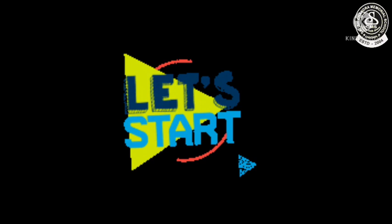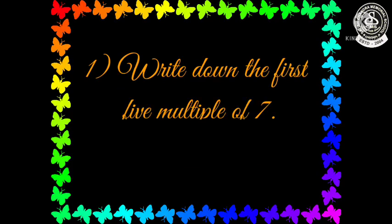Let us start. Number 1: Write down the first 5 multiples of 7. First 5 multiples of 7 means the table of 7 up to 5 — what are the answers you will get from 7 multiplied by 1 to 7 multiplied by 5. These 5 multiples you have to write down as your answer.